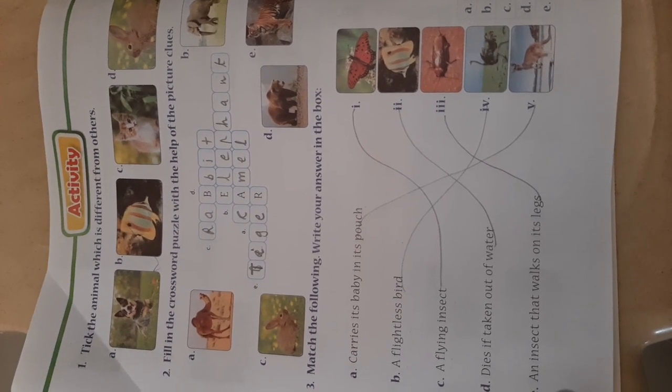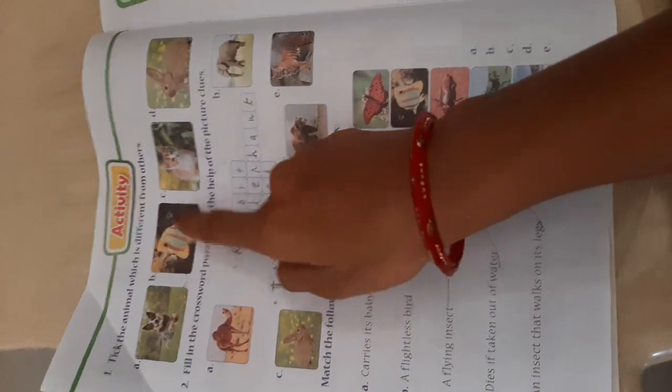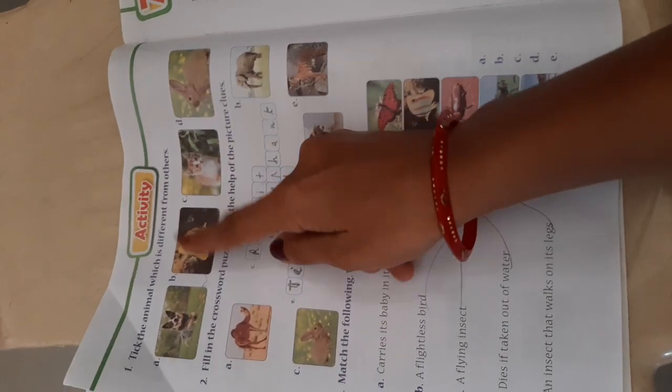The activity is: tick the animal which is different from others. Here four pictures of animals are given - A, B, C, and D. You have to look at these animal pictures and find out the odd one.